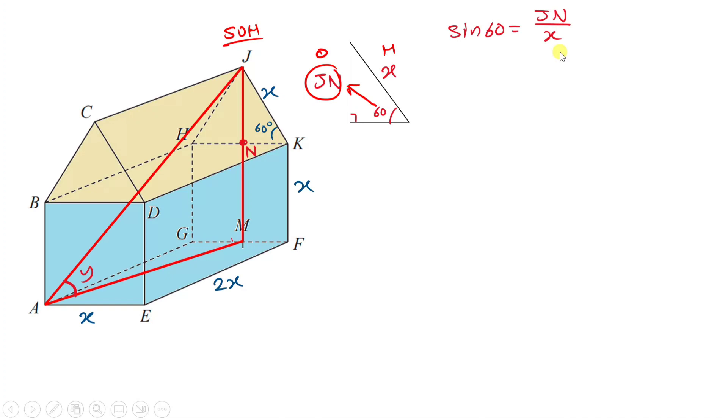This means we're going to have sine of angle 60, which is equal to the opposite, JN, over X. Now, all you want to do is literally just multiply X across, so you're going to have JN as the subject. And if you do that, you're going to get X times sine 60. And sine 60 in your calculator, you get root 3 over 2, X. All your answers here are going to be in terms of X.